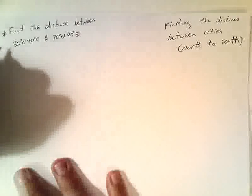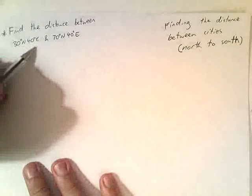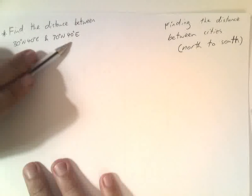Okay, so here's a question that we can look at. Find the distance between 30 degrees north, 40 degrees east, and 70 degrees north, 40 degrees east.